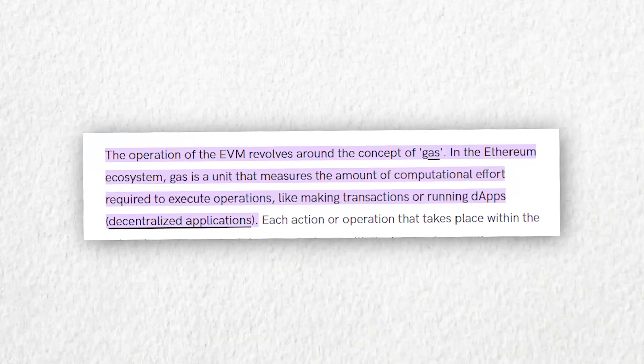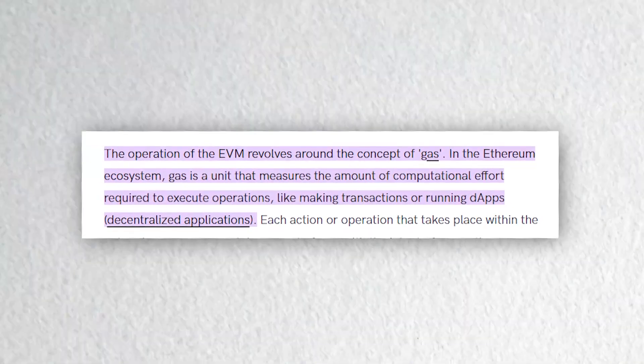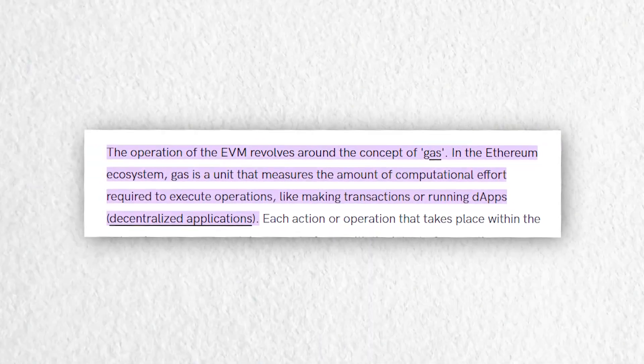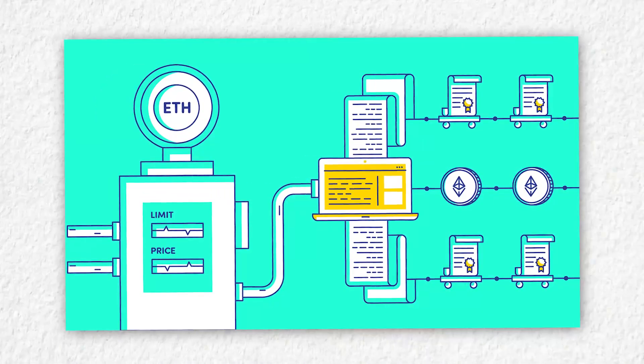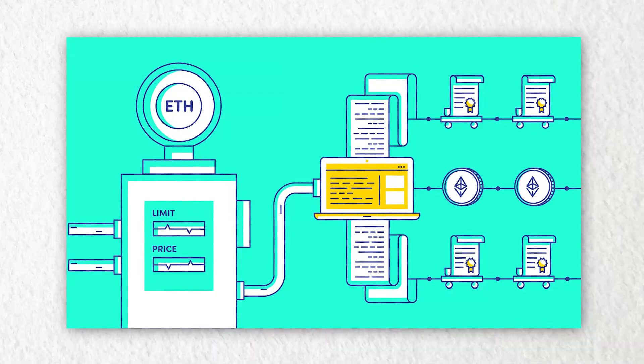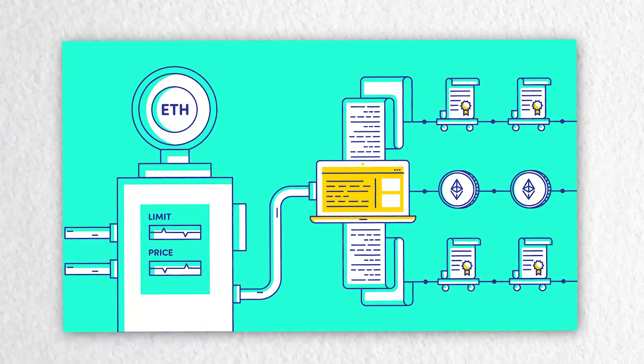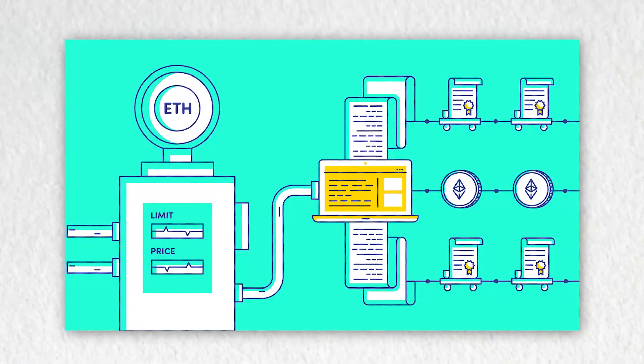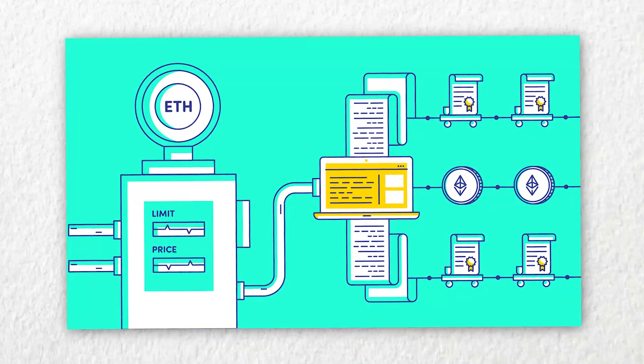Gas is a unit that measures the amount of computational effort required to execute operations like making transactions or running dApps. When users interact with the Ethereum network, they are required to pay gas fees. These fees are paid in Ether and are used to compensate miners for their work in validating and adding new transactions to the blockchain. The gas fee is determined by the complexity of the transaction and the current demand for network resources.